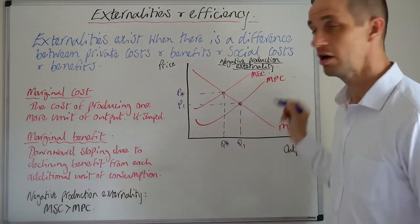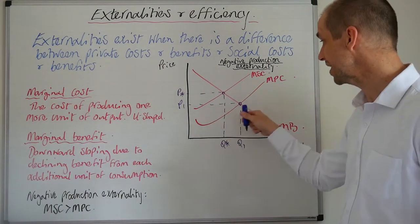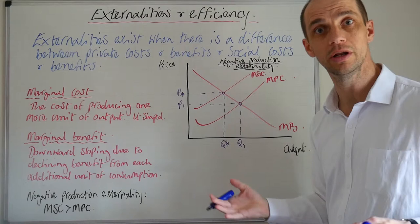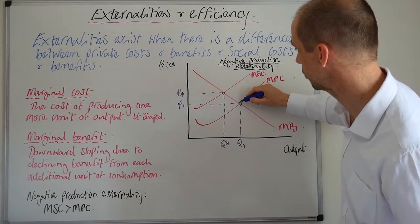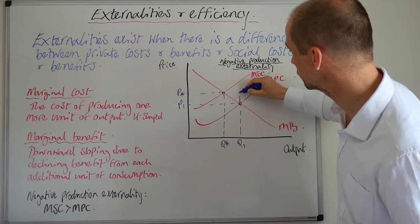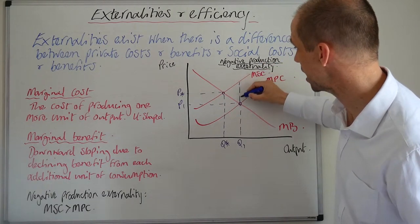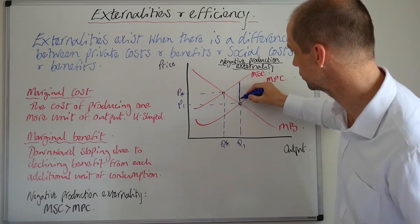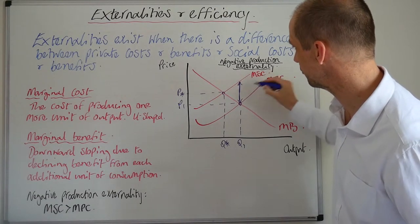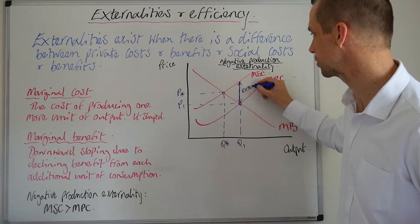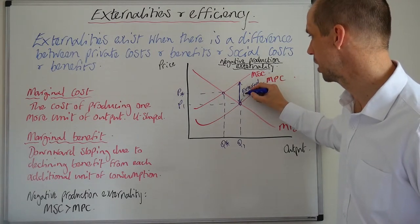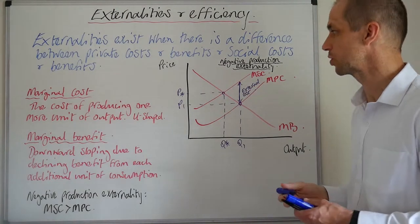But for the firm, they're going to want to actually increase the output of this good if they want to take more market share and more revenue and so on. So therefore, what we can see is that at this point, the external cost that is imposed upon society is that vertical distance there. That is our external cost right there.